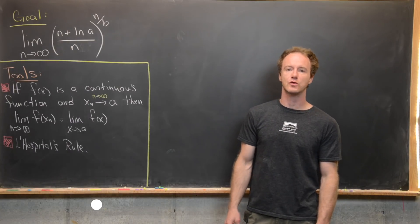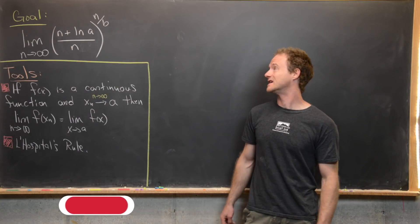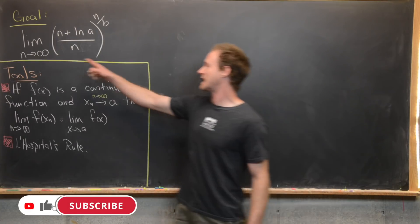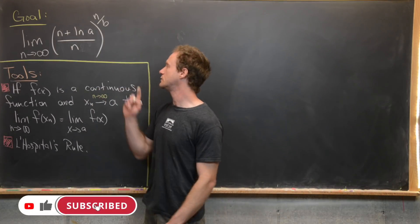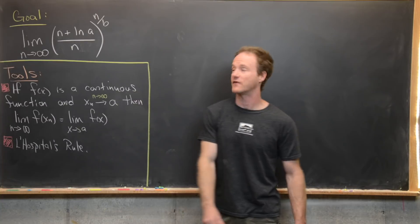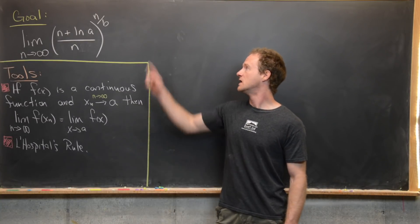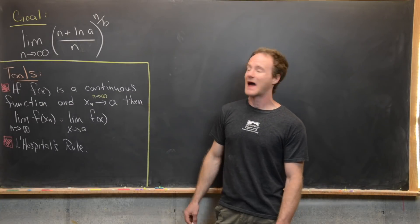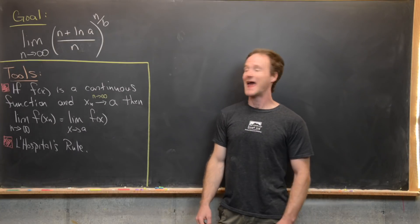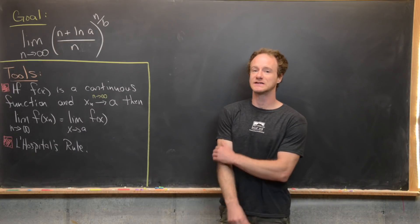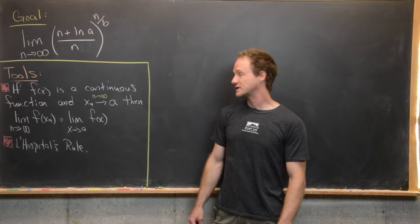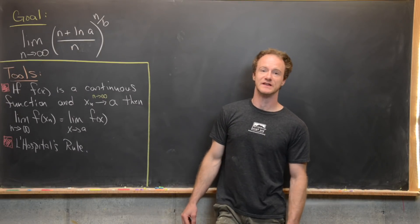Here we're going to find the value of a viewer-suggested limit: the limit as n goes to infinity of (n + ln(a)/n) to the power n over b, where we want a and b both to be positive real numbers.